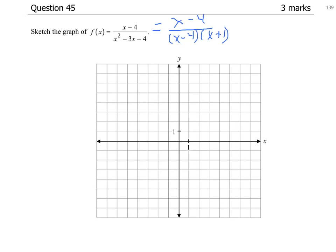So we have a common factor of (x minus 4), so we can cancel out that common factor of (x minus 4). So our equation simplifies to 1 over (x plus 1). But we have to remember that x cannot equal 4.